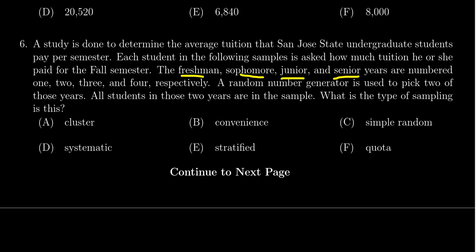And we're going to number them one, two, three, four. A random number generator is used to pick two of those numbers. So a random number generator could pick something like one and two, or one and three, or two and four, or something like that. And so all students in those two years are going to be in the sample. What type of sampling is this?